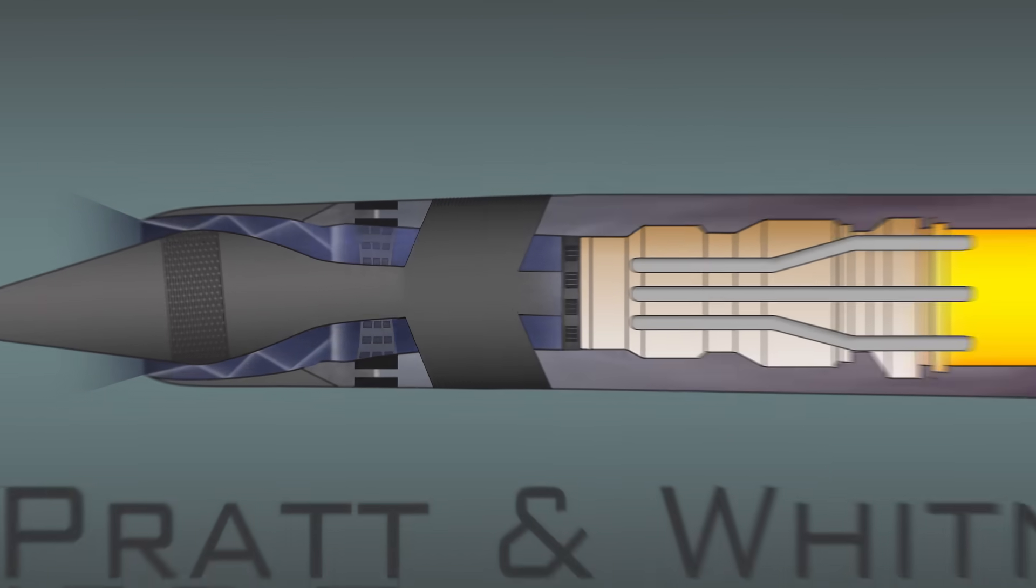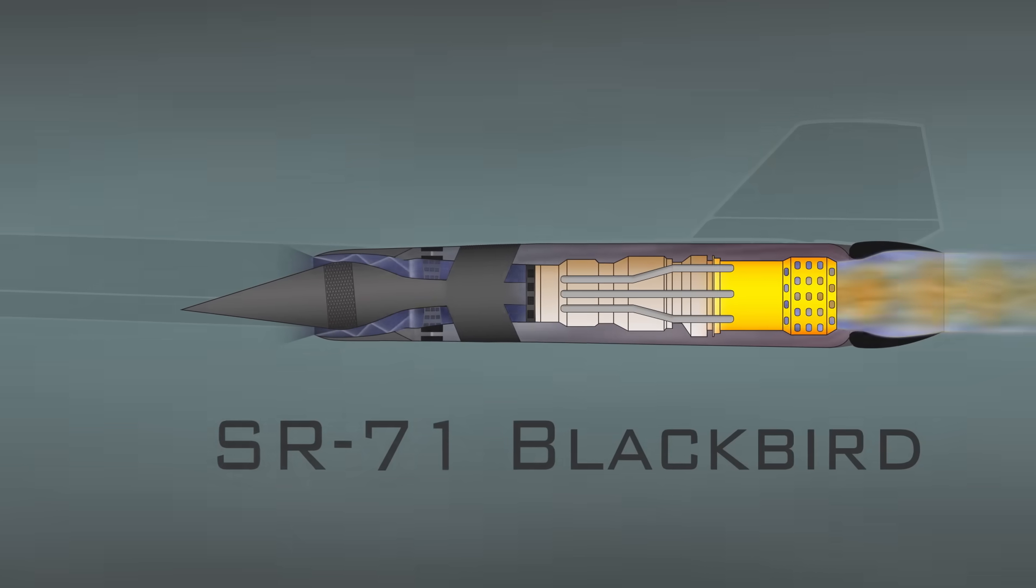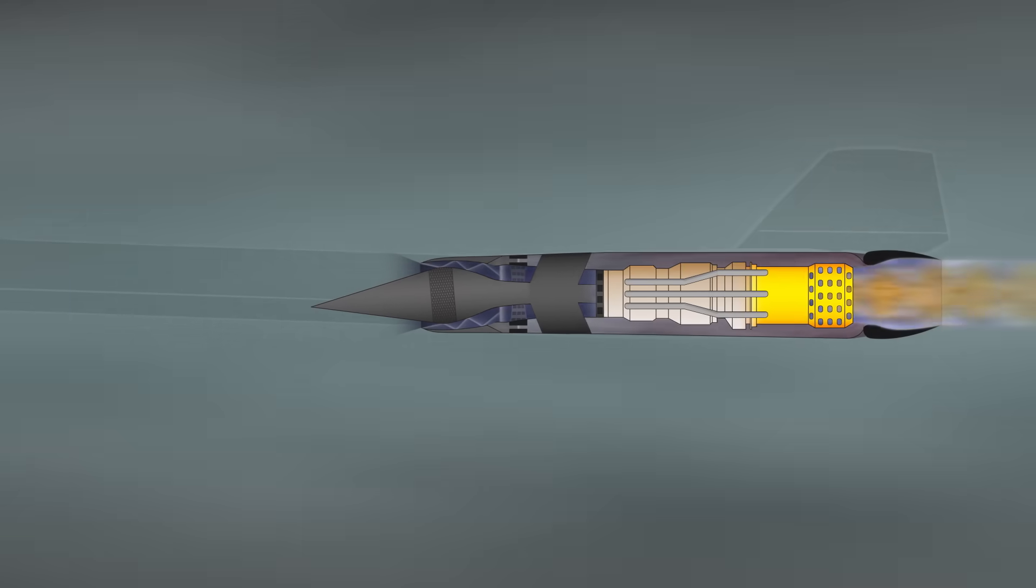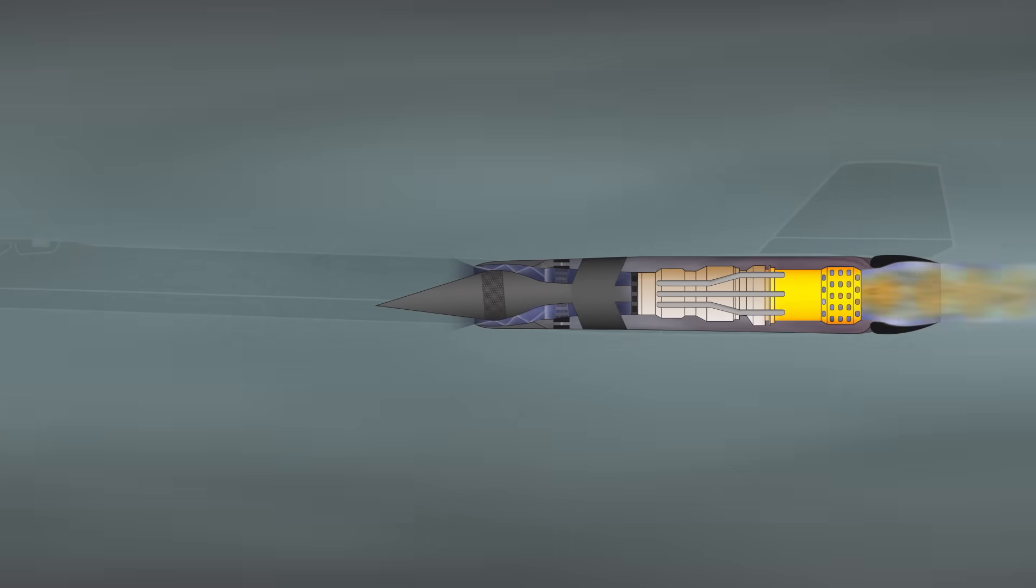And that's it! That's how the J58 turbo ramjet inside of the Blackbird engine nacelle works. Now when you look at these diagrams, they don't seem so complicated after all. Don't forget to like this video and subscribe to Tech Laboratories for more mind-blowing videos on science and technology. I'm Tech Adams saying keep thinking and thanks for watching.